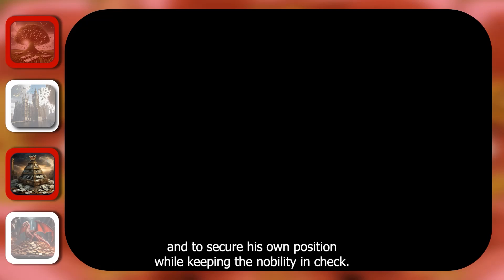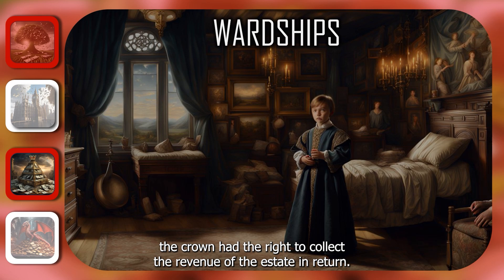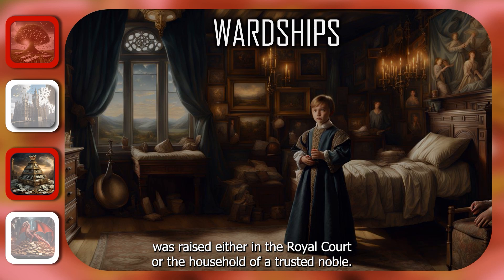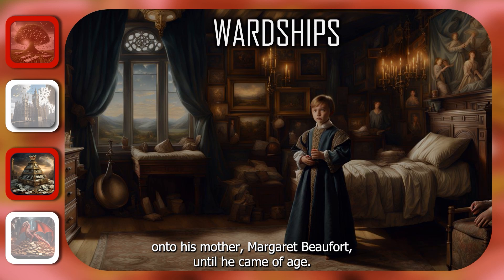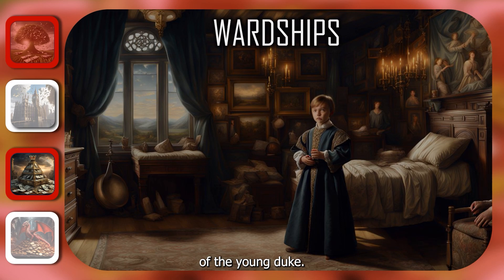Wardships were a long-established feudal due. If a member of the nobility died without an adult heir, the crown had the right to collect the revenue of the estate. In return, it was the king's responsibility to ensure that the ward — the underage heir — was raised either in the royal court or the household of a trusted noble. For example, Henry bestowed the wardship of the underage third Duke of Buckingham on to his mother, Margaret Beaufort. Until he came of age, the revenue of the duke's extensive estate would go to the crown, some of which would then go to Beaufort for the accommodation and education of the young duke.